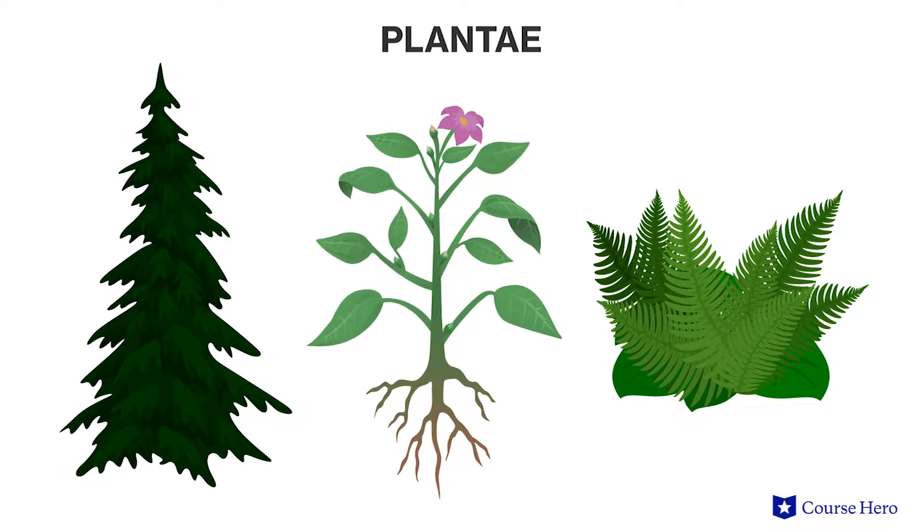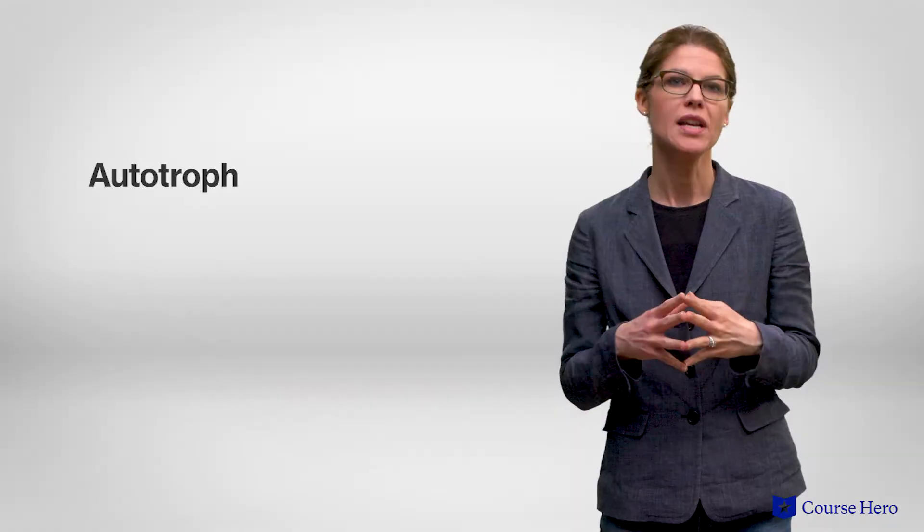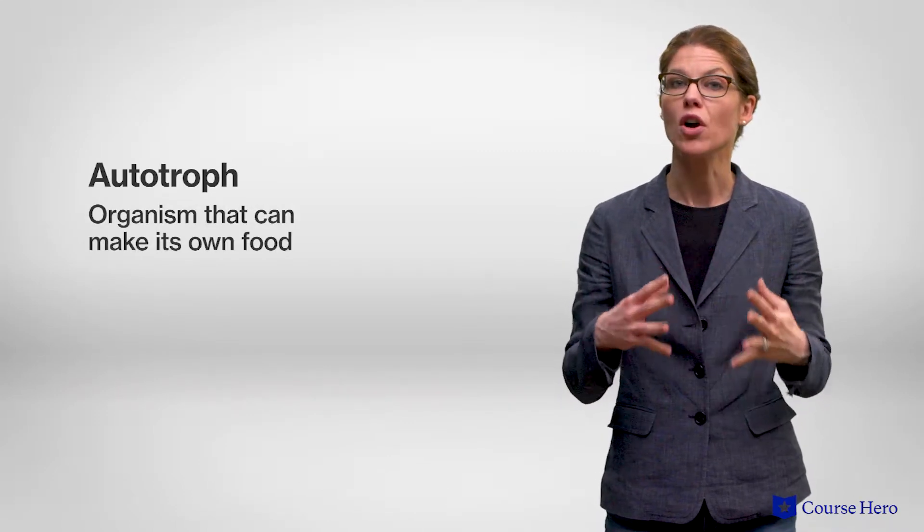The kingdom plantae consists of organisms that are autotrophs. In other words, they're able to make their own food and, with few exceptions, they do this through the process of photosynthesis.